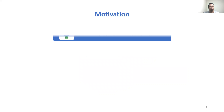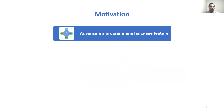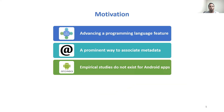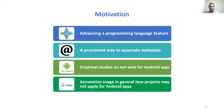A key method for improving any programming language feature is to understand its uses and adoption in practice. In this work, we wanted to understand annotation uses in Android apps because annotation is a prominent way to associate metadata. Also, there are no empirical studies on annotation uses in Android apps, although there are some empirical studies on Java annotation uses in general Java projects — meaning Java applications that are not Android apps.